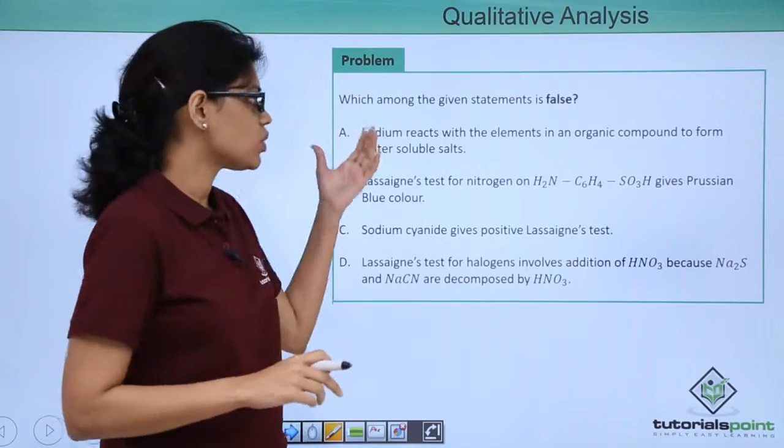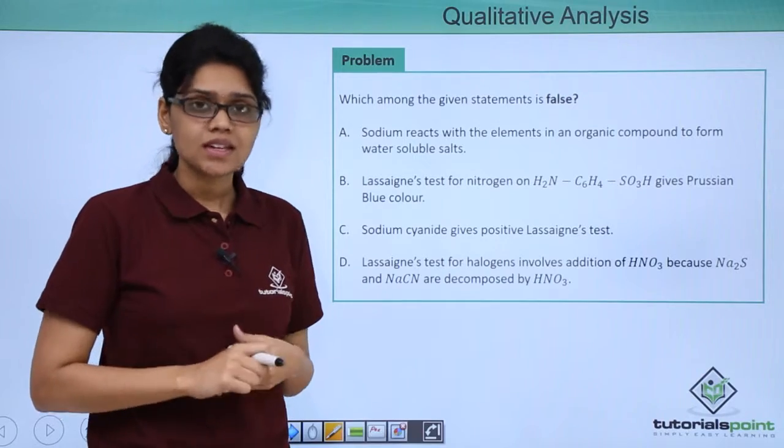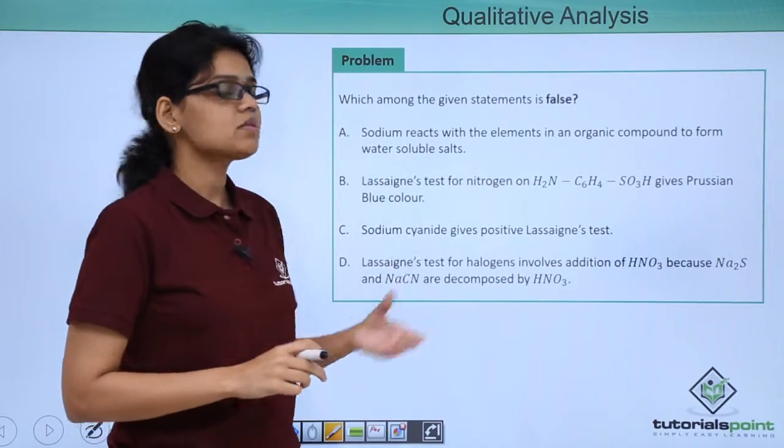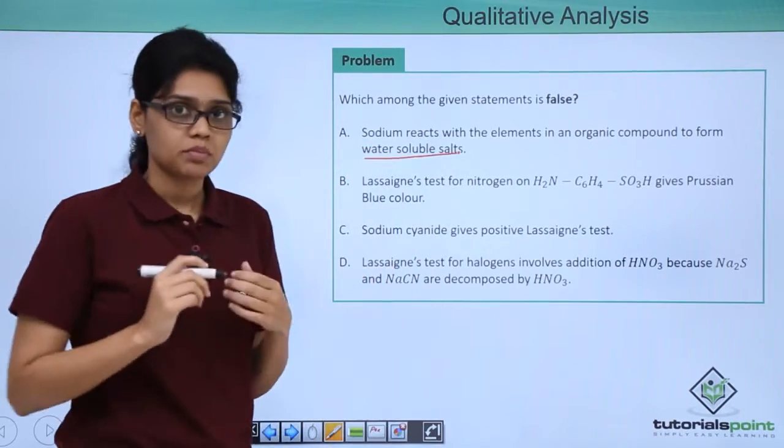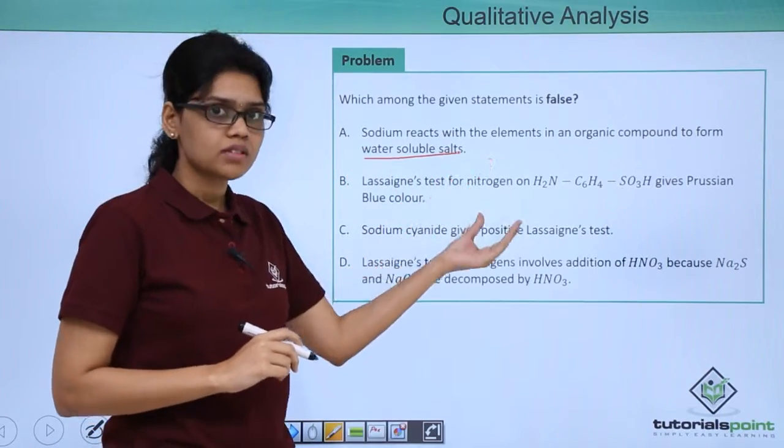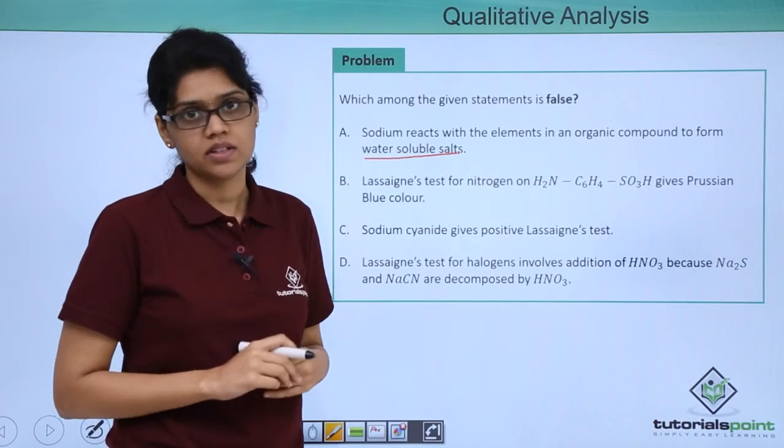We have 4 statements and 4 options here. Option A states that sodium reacts with elements in the organic compound to form water soluble salts. Option B states that Lassaigne's test for nitrogen of this particular compound gives Prussian blue colour.